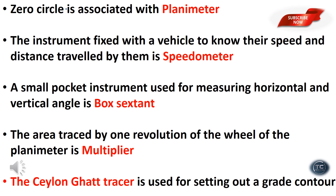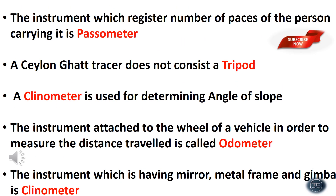The area traced by one revolution of the wheel of the planimeter is the multiplier. The clinant gut tracer is used for setting out a grade contour. The instrument which counts the number of paces of the person carrying it is the passometer.